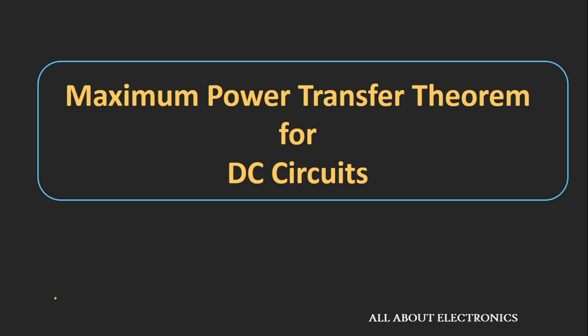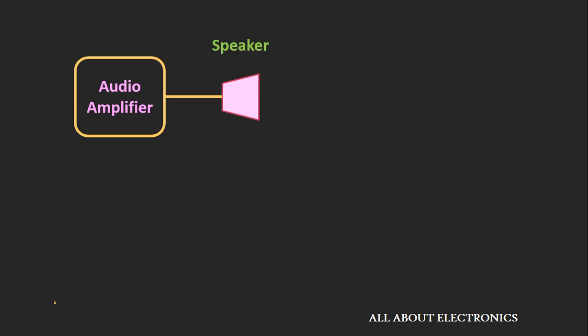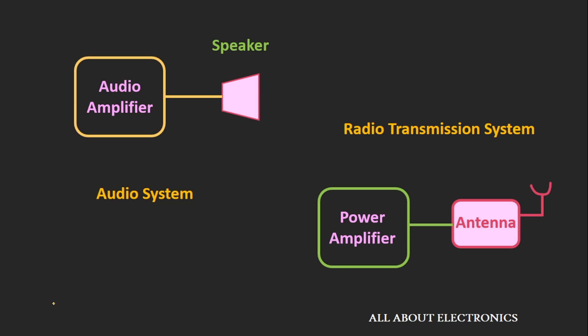In this video we will see the maximum power transfer theorem in DC circuits. Sometimes in electrical and electronic systems, we require that the maximum amount of power should get transferred to the load — like in the case of an audio system, where maximum power from the audio amplifier should get transferred to the speaker. Similarly, in a radio transmission system, maximum power from the power amplifier should get transferred to the antenna.